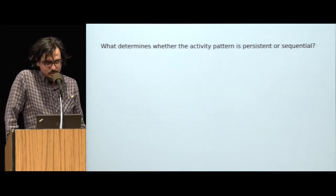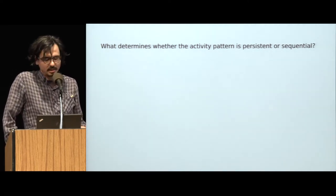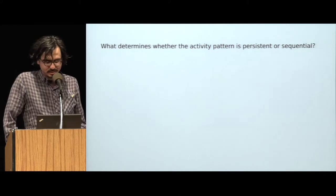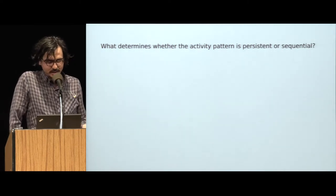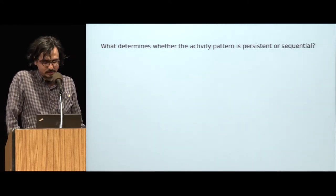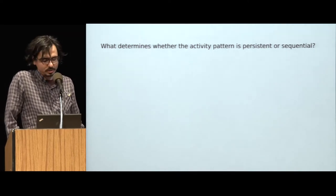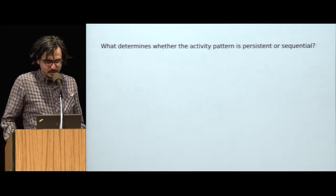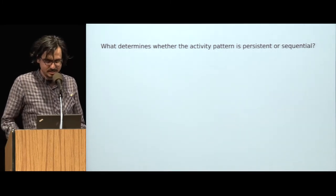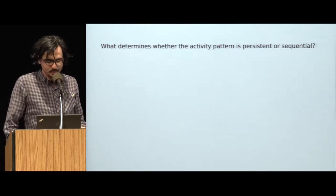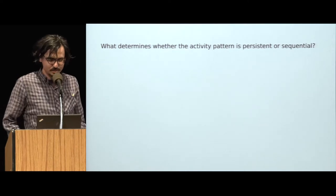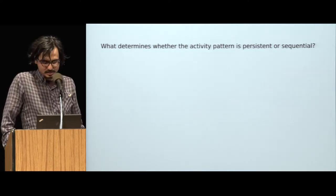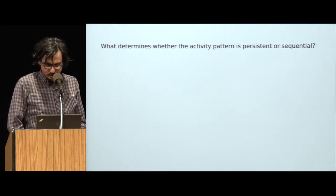One way to address this question would be to raise an army of rodents and run lots of experiments, systematically varying every experimental variable or neural circuit property that we think might be important. But we didn't have an army of rodents. Instead, we did have an army of CPUs at our disposal. So we addressed this question by running these experiments in silico instead.